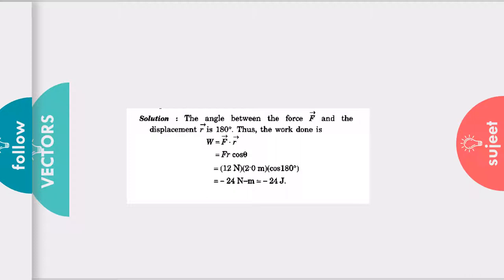Now we know from the dot product formula, W equals F times r times cos theta. F is 12 Newton, r is 2 meters, and cos theta is cos 180 degrees. And you know cos 180 from trigonometry is minus 1. So you get minus 24 Joules.